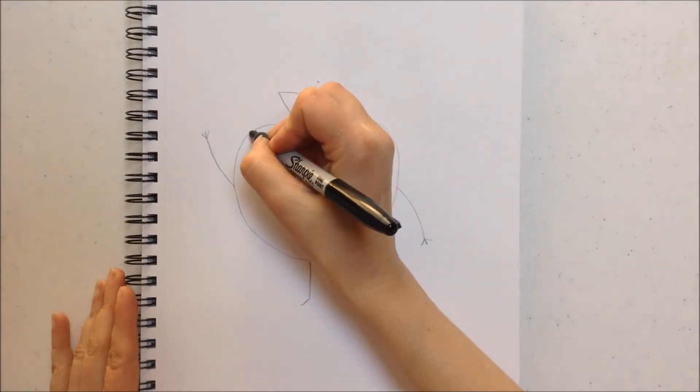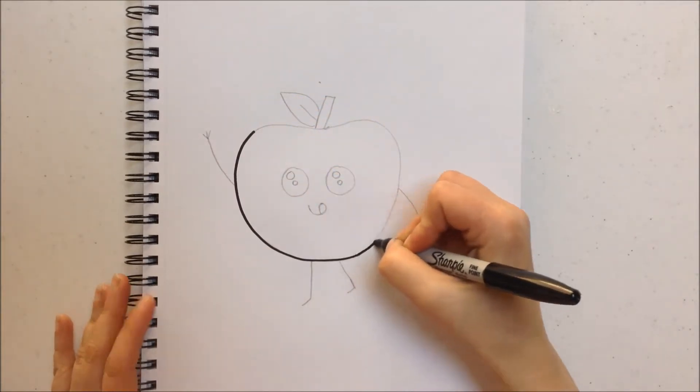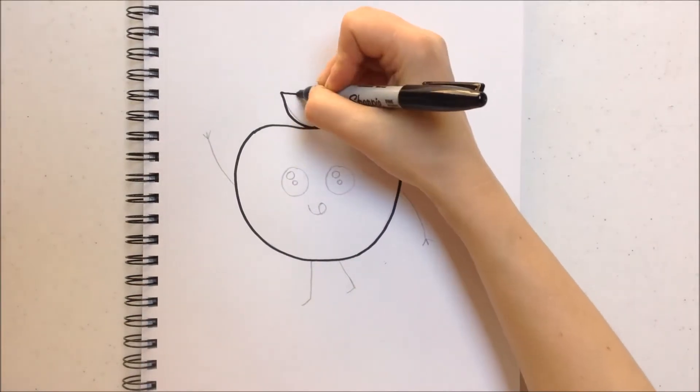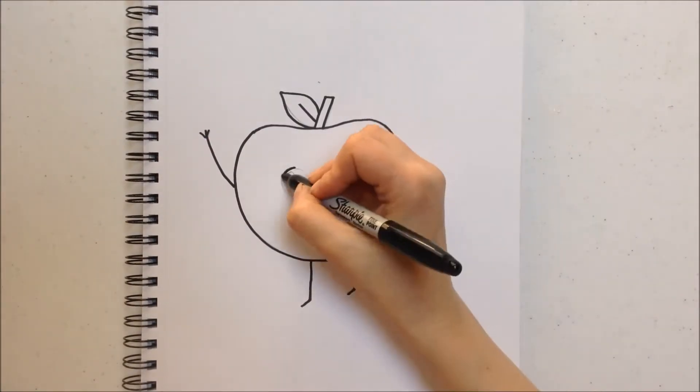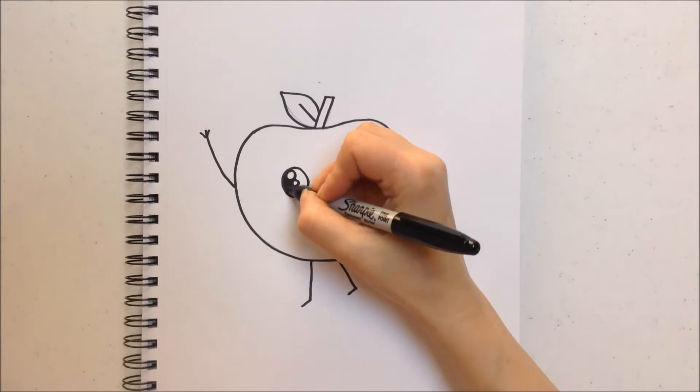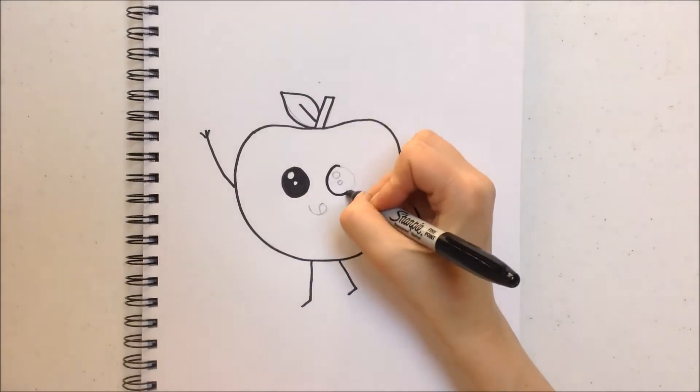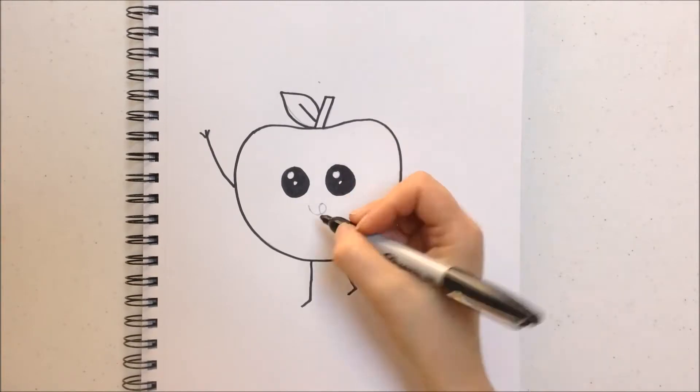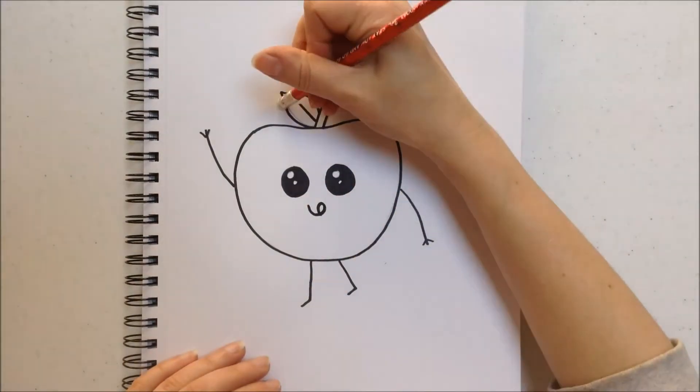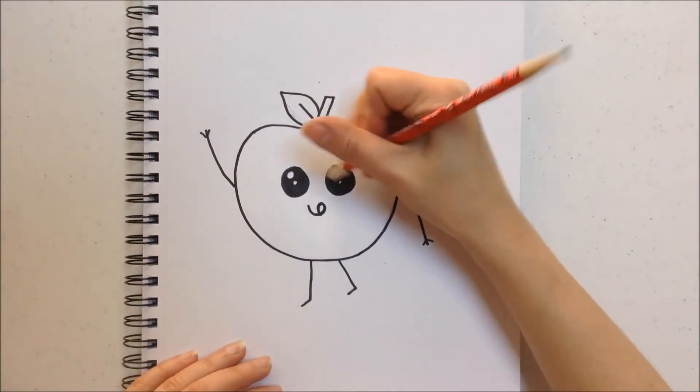Outline everything with a black permanent marker. Fill in the eyeballs. Now we're going to erase any pencil that we missed with the black permanent marker.